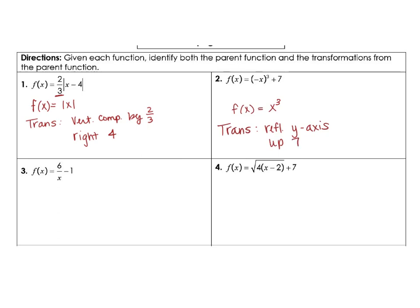Our next problem, number 3 – your parent function here, starting out, would be 1 over x. And then your transformations that are going on here, it looks like we have a vertical stretch by 6, and you also are moving down 1.